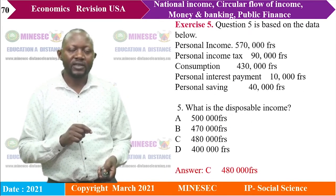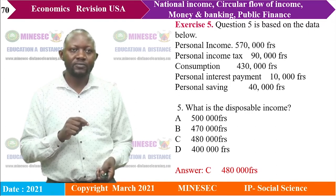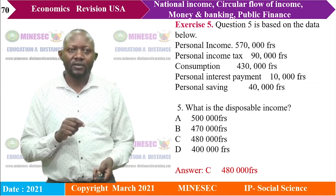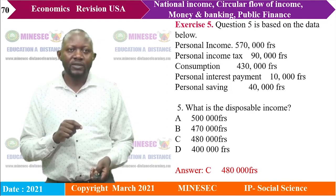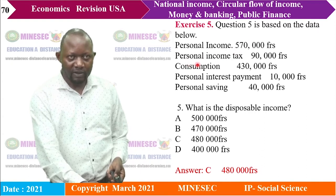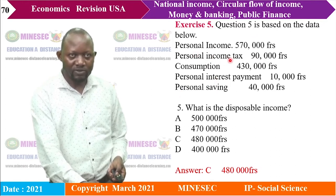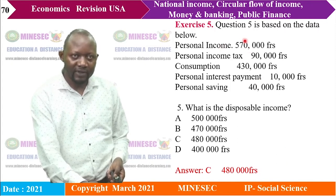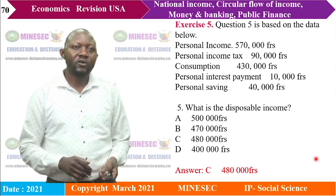Exercise 5: Given personal income: 570,000; personal income tax: 90,000; consumption; personal interest payment; personal saving. What is disposable income? Disposable income = personal income minus personal income tax = $570,000 - $90,000 = $480,000.